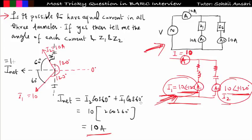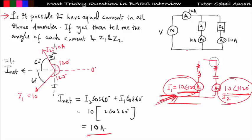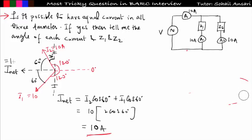Some students got confused, thinking they can get the answer by taking minus 60 and plus 60 — that is correct, you can get the answer that way. But if the interviewer specifically says take 10 at angle minus 120 and 10 at angle plus 120, you have to evaluate whether it is possible or not. If the interviewer asks for what angle value this is possible, then you can easily construct the I1 and I2 phasors using an RL and RC circuit at an angle of 60 degrees.